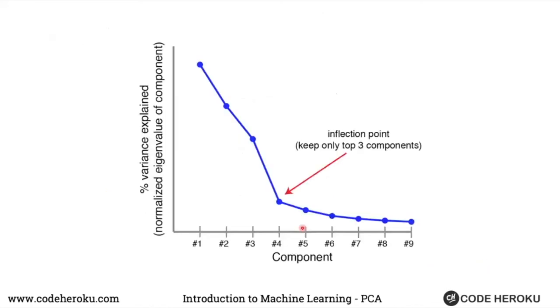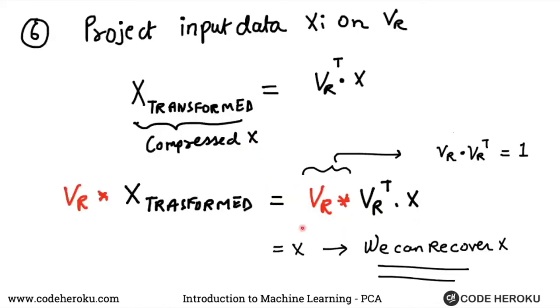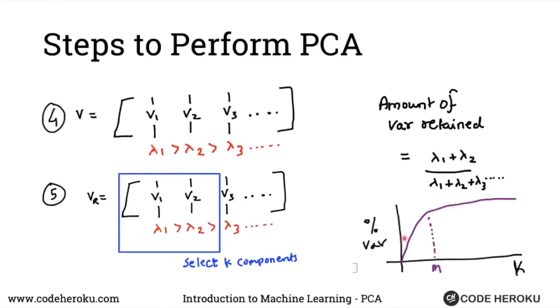This slide is just another version, another way to represent this graph over here. Sometimes you see people selecting m or how many principal components to keep by looking at this chart, which is a cumulative sum of all the variation which is retained.